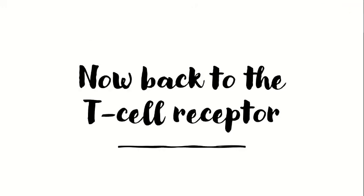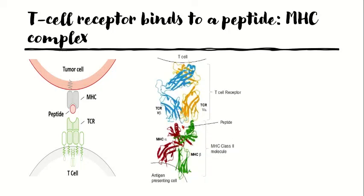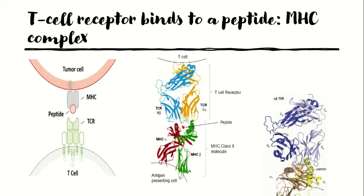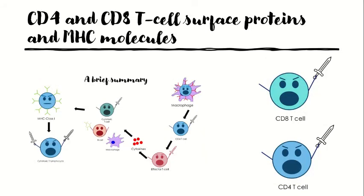Moving back to the T cell receptor: the crystallographic structure shows that the TCR is aligned diagonally over the peptide and the peptide binding cleft. This illustrates the interaction between the MHC molecule and the T cell receptor. Now let's look at how MHC molecules interact with the CD8 and CD4 T cells, establishing the link between T cell receptors and the CD4 and CD8 T cell co-receptors.